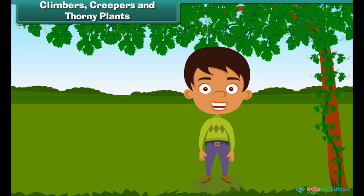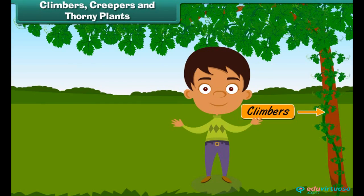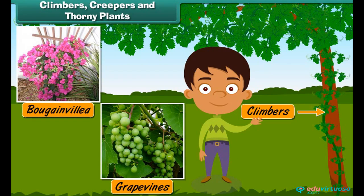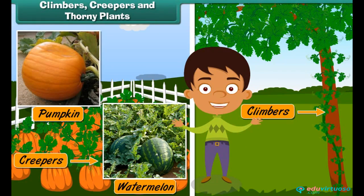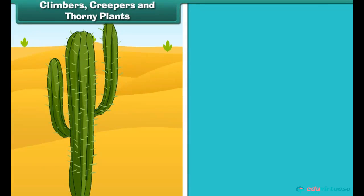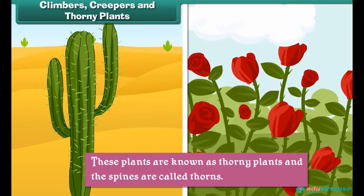Climbers are weak plants. They cannot stand erect without support. They grow along the ground without support but can grow straight up with support. Bougainvillea and grape vines are examples of climbers. Creepers, like climbers, are weak plants, but they grow along the ground only. Pumpkin and watermelon are examples of creepers. Some plants such as the cactus and the rose have spines on their bodies. These are known as thorny plants, and the spines are called thorns. Thorns protect these plants from animals.